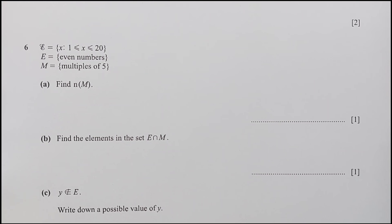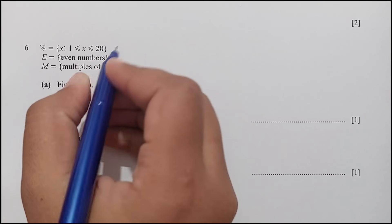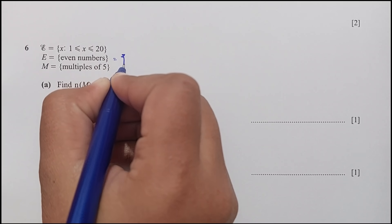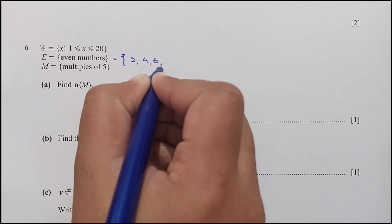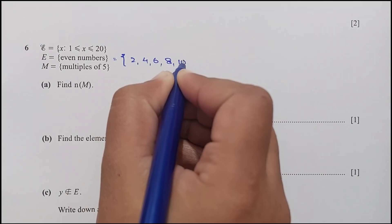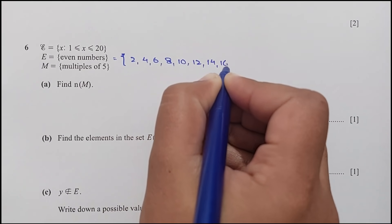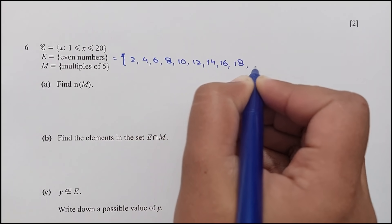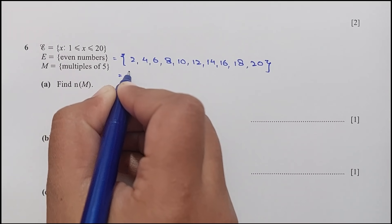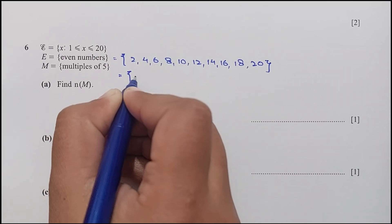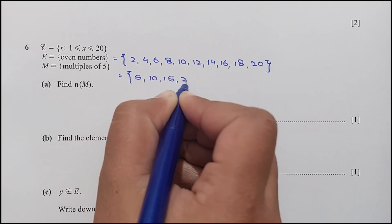Question number 6: we have a universal set from 1 to 20. E is the even numbers: 2, 4, 6, 8, 10, 12, 14, 16, 18, and 20. And M is the multiples of 5: 5, 10, 15, and 20.